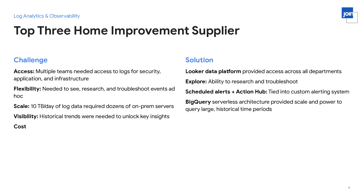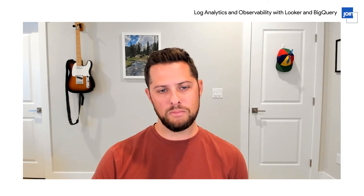So they came to us and wanted to use the Looker data platform to provide access across each of those three departments, giving each only the data they needed. They wanted to use Looker's Explorer function to research and troubleshoot their log events. A major part of their use case was scheduled alerting — they had criteria and thresholds that, if met, should trigger an alert. For example, if a user ID logged in from the United States and that same user ID then logged in from a computer in Russia five minutes later, those were the types of conditions they wanted Looker to run queries for in the background and trigger an alert when conditions were met.